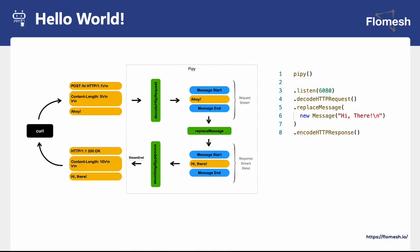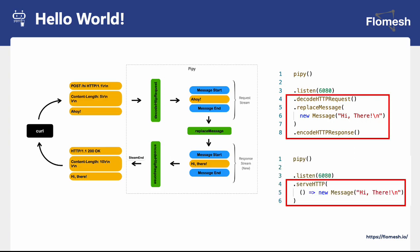Here is a look at a simple hello world example. We are writing a simple Pype script that listens on port 6080 and returns 'hi there' to every HTTP request regardless of what verb you use. We are using three different filters: decode HTTP, replace message, and encode HTTP response. The left-hand side shows a visual depiction of the messages or events happening inside Pype. If you just need a simple hello world script, you can do that with only three lines — as shown on the right side. The server HTTP filter is equivalent to doing the decoding, replacing the message, and encoding the HTTP response.